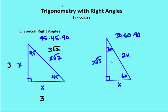In the case of a 30-60-90 triangle, the side opposite the 30-degree angle is X, the side opposite the 60-degree angle is X root 3, and the side opposite the 90-degree angle is 2 times the length of the side opposite the 30-degree angle. So if I have a value of 4 for my side length opposite the 30-degree angle, I know the side opposite the 60-degree angle is 4 root 3, and I know that my hypotenuse is 8.